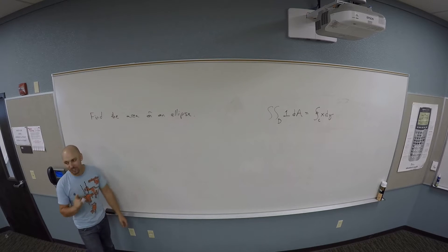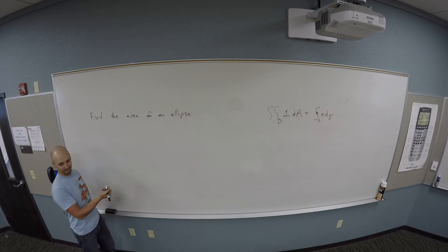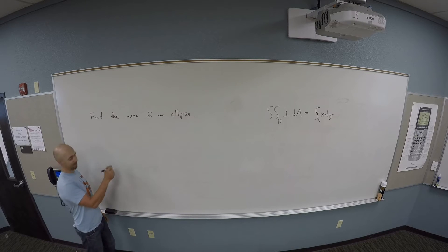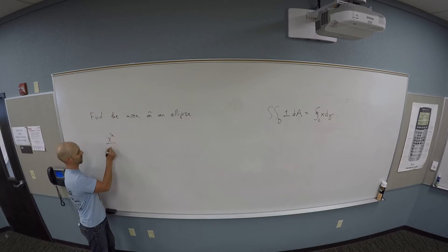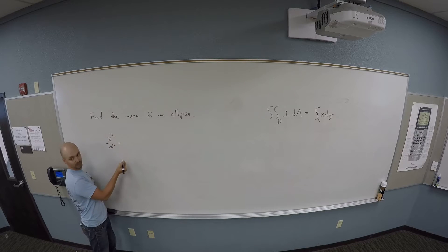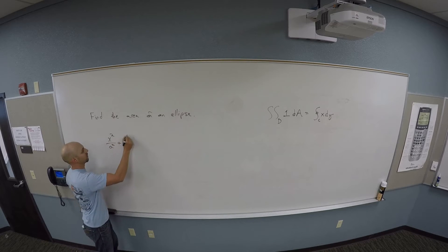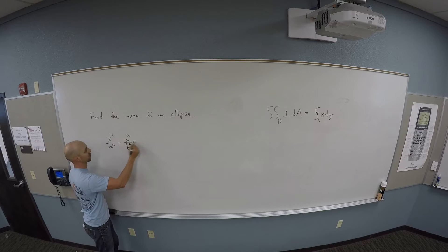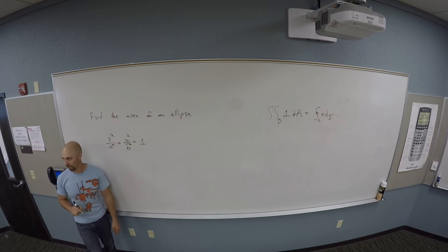Okay, so you should know what an ellipse looks like, which is x squared over a squared plus y squared over b squared equals one.